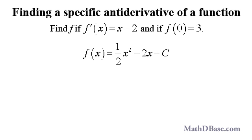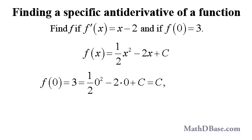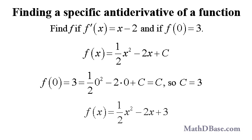Since we're given that f has the value 3 when x is equal to 0, substitute 0 for x in the expression for f to find the value of c, and the specific function that is both an antiderivative of x minus 2 and passes through (0, 3). Substituting x equals 0, we get half times 0 squared minus 2 times 0 plus c, which is c. So c is equal to 3, and the specific antiderivative is half x squared minus 2x plus 3.